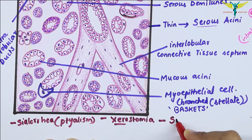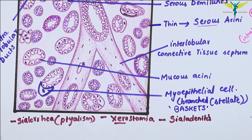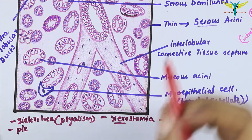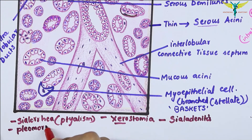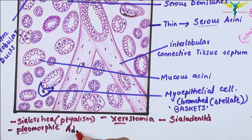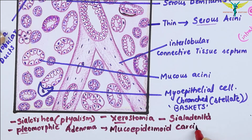The inflammation of the salivary glands is called sialadenitis. The most common tumors of the salivary gland are the pleomorphic adenoma, also called the mixed salivary tumor — 'pleo' meaning mixed and 'morphic' meaning appearance. The mucoepidermoid carcinoma is also the most common malignant salivary tumor.